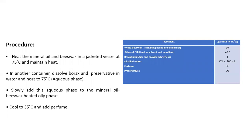Procedure for preparing cold cream: The mineral oil and beeswax are placed in a jacketed vessel at a temperature of 75 degrees centigrade. In another container, borax and preservative are dissolved in water and maintained at the same temperature as the oily phase. This is the aqueous phase. Slowly add the aqueous phase to the preheated oily phase of mineral oil and beeswax. Mix further, cool to 35 degrees centigrade, then add perfume.